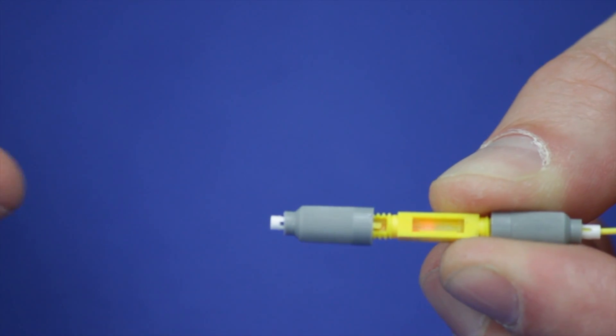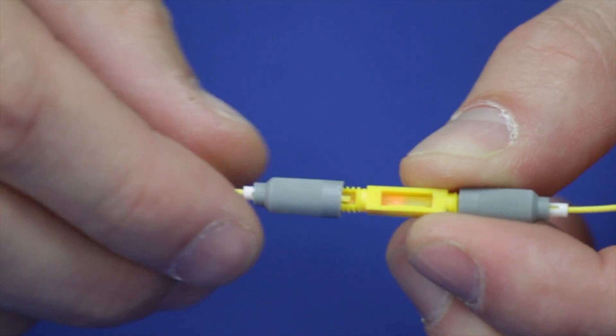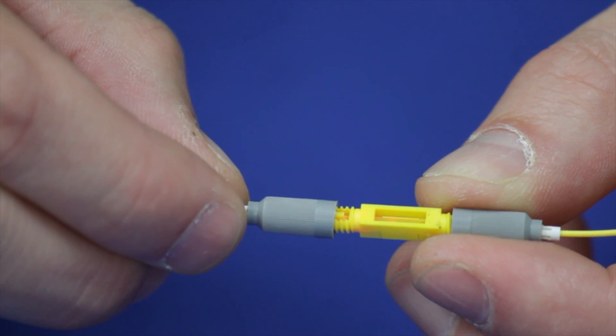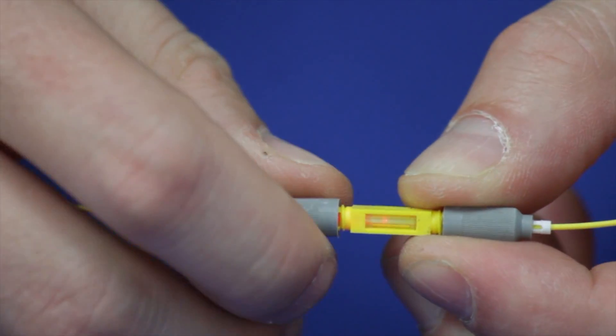The UltraSplice can also be used for emergency repairs. Simply insert both ends into the splice for any combination of 900 micron and 250 micron fibers. Thread the fibers in place for a quick emergency repair.